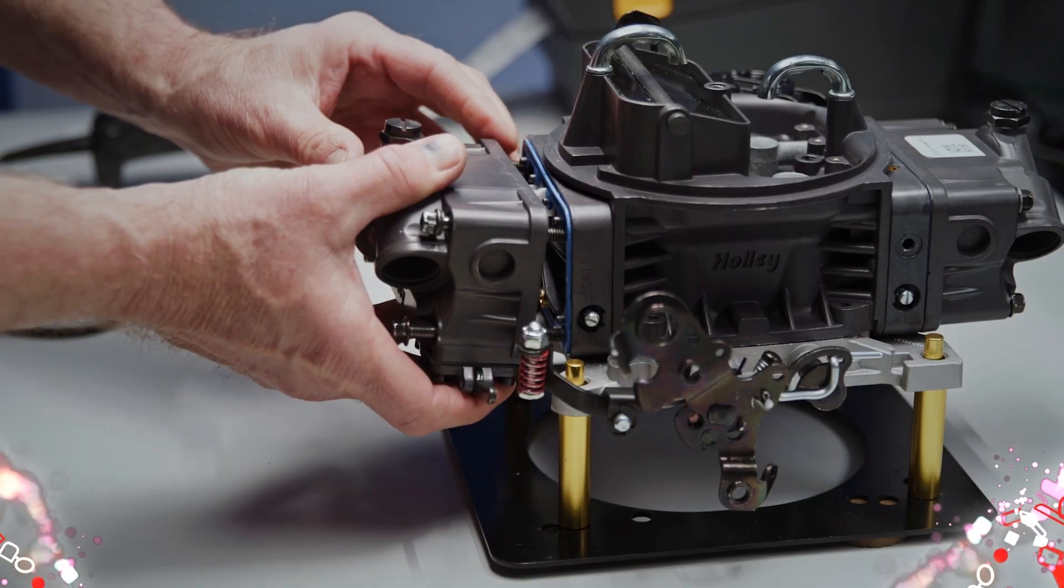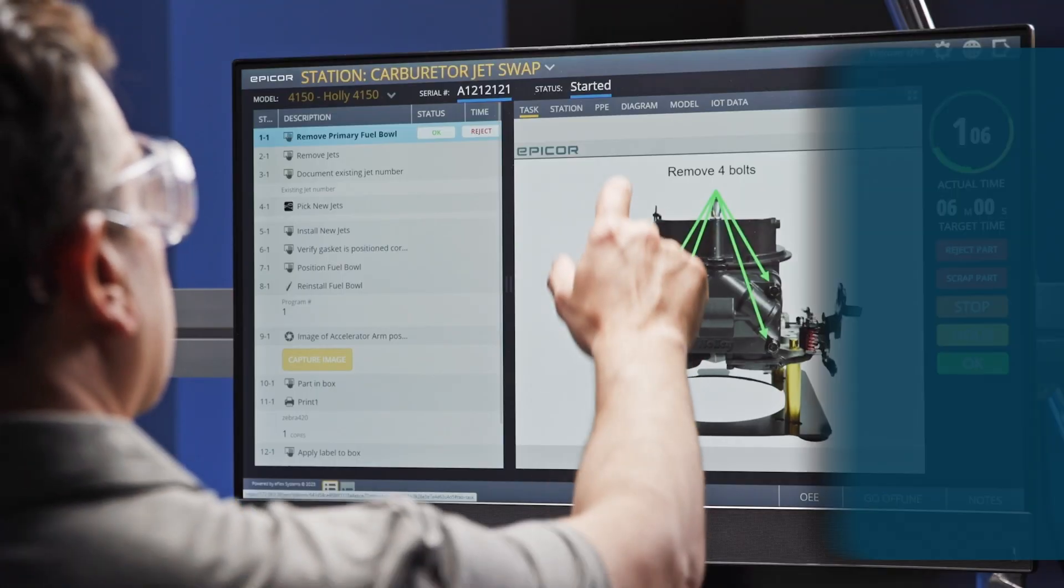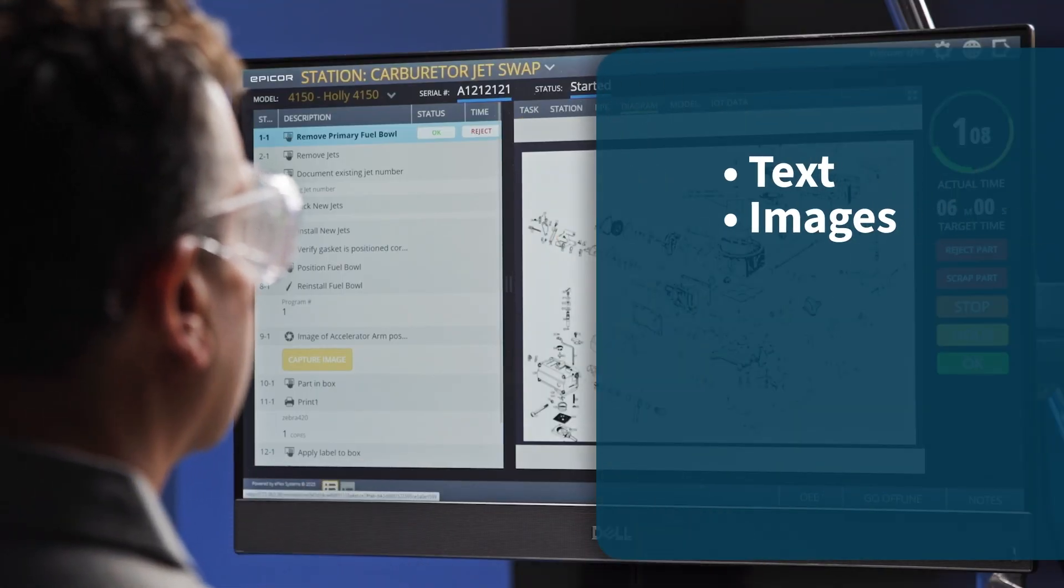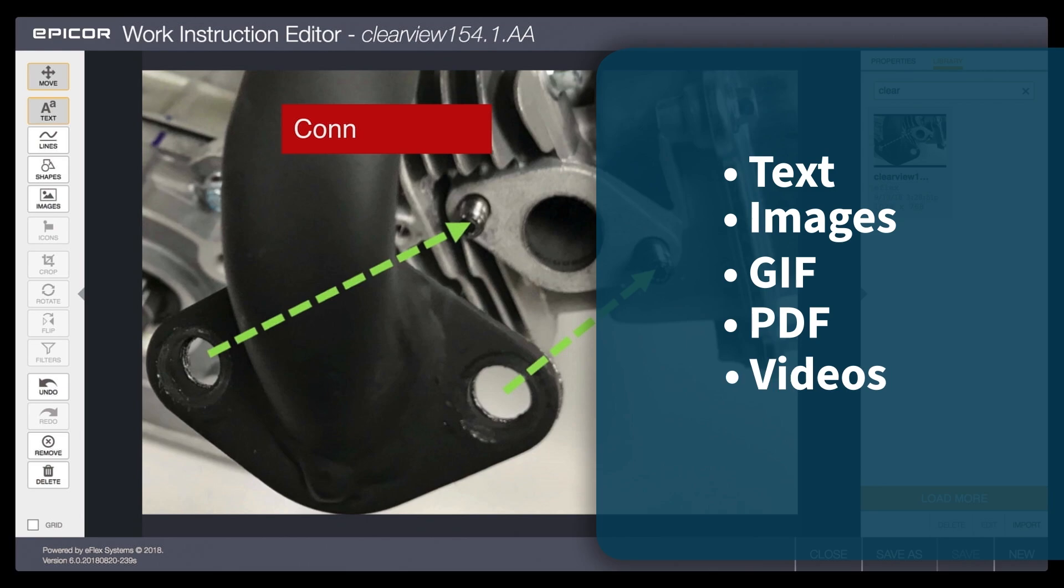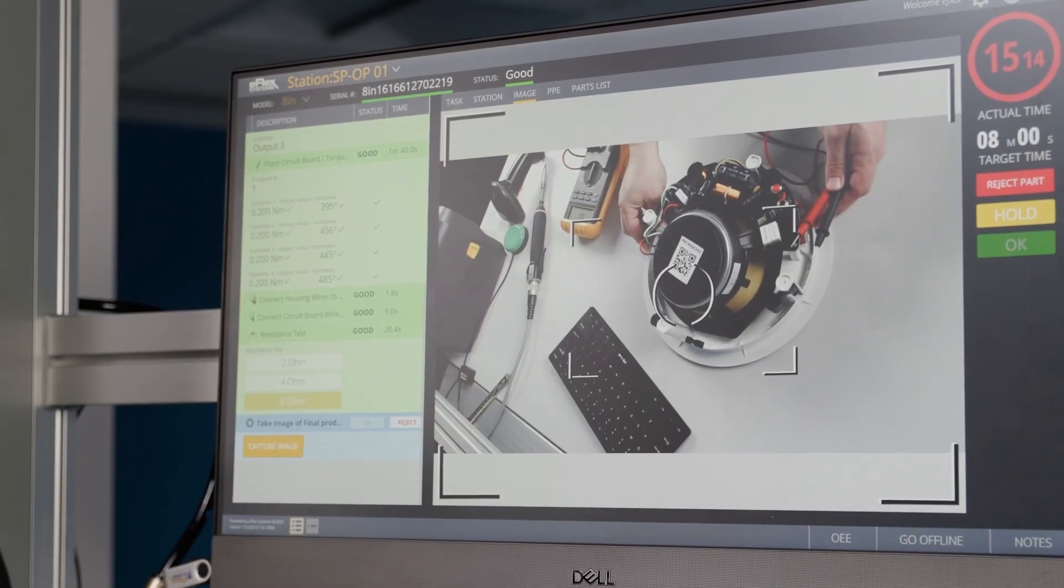Epicor Connected Process Control's multimedia capabilities deliver instructions through text, images, GIFs, PDFs, videos and more, ensuring maximum efficiency in your operations.